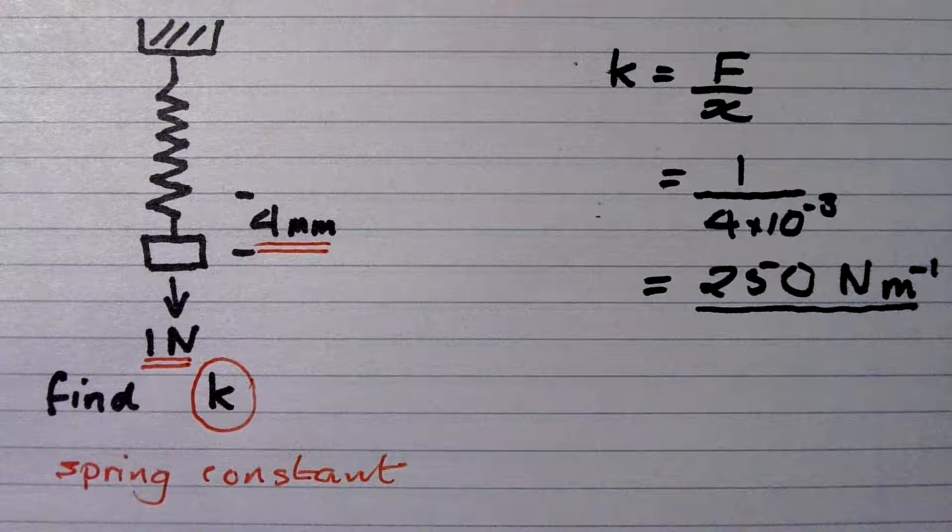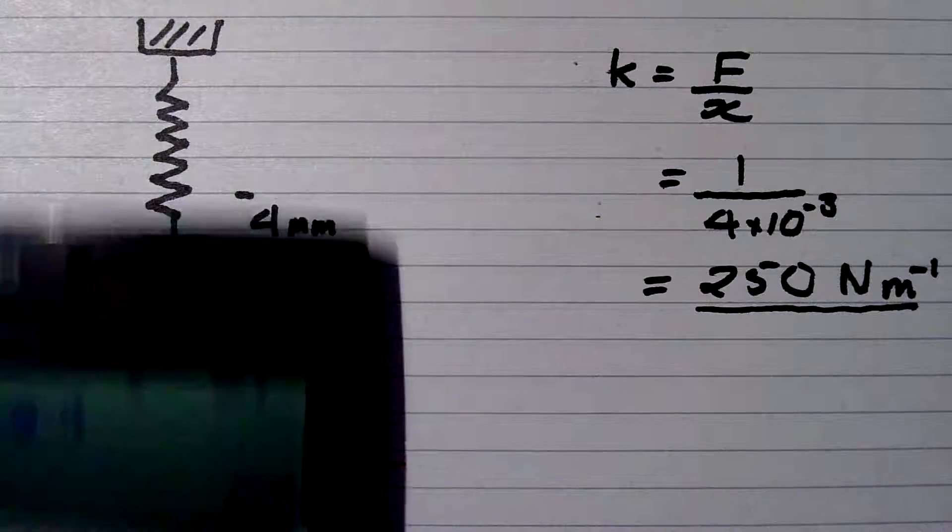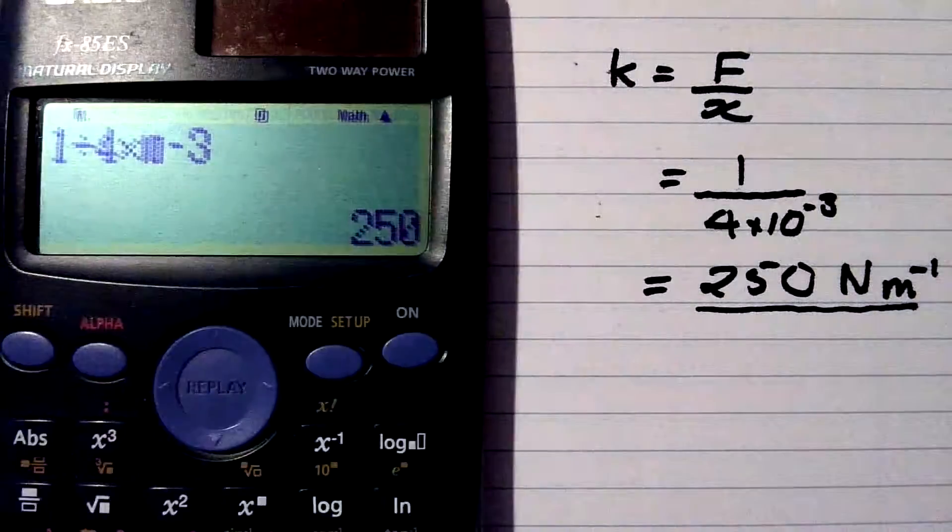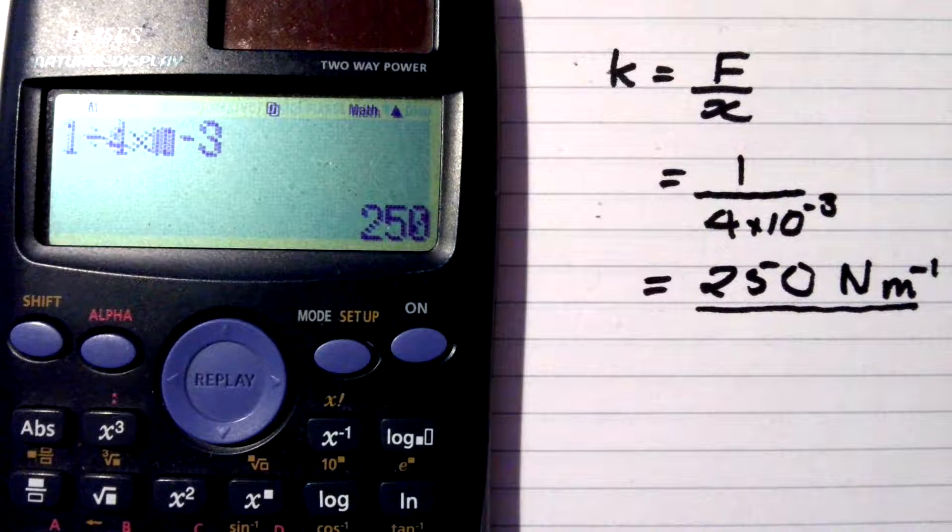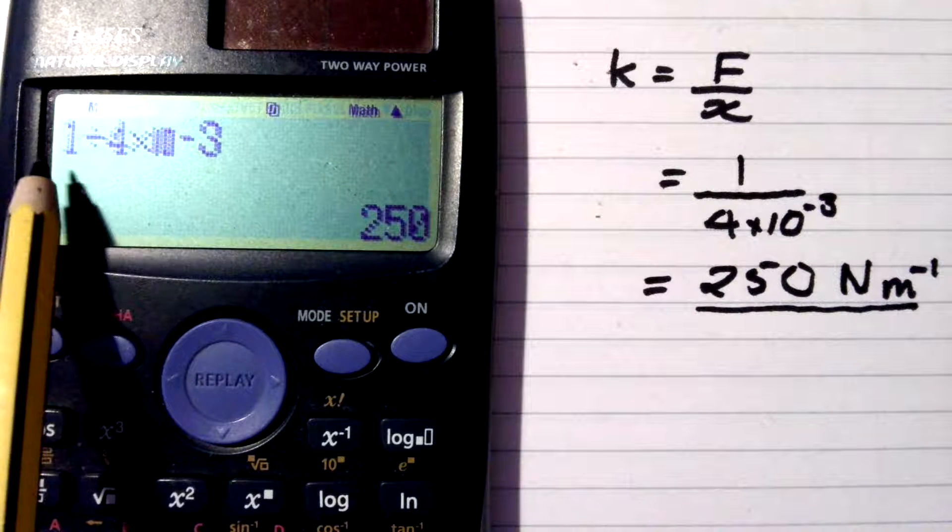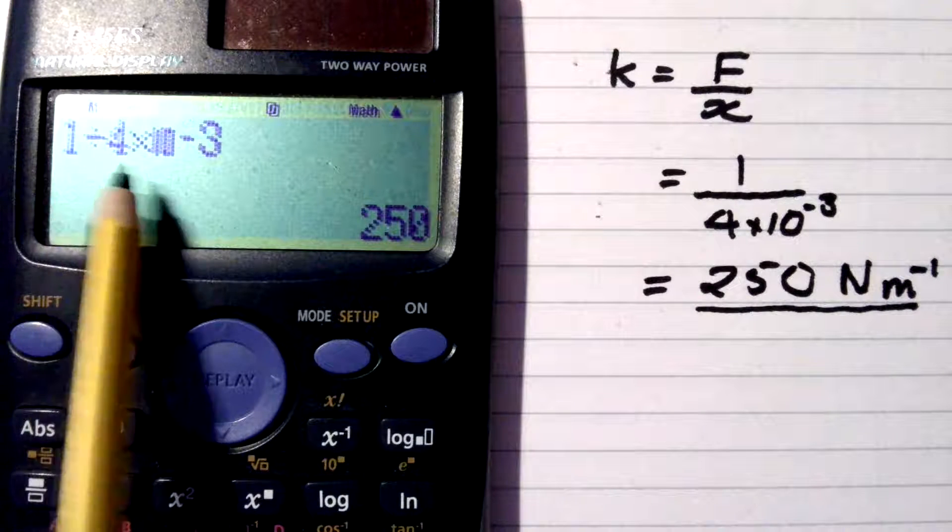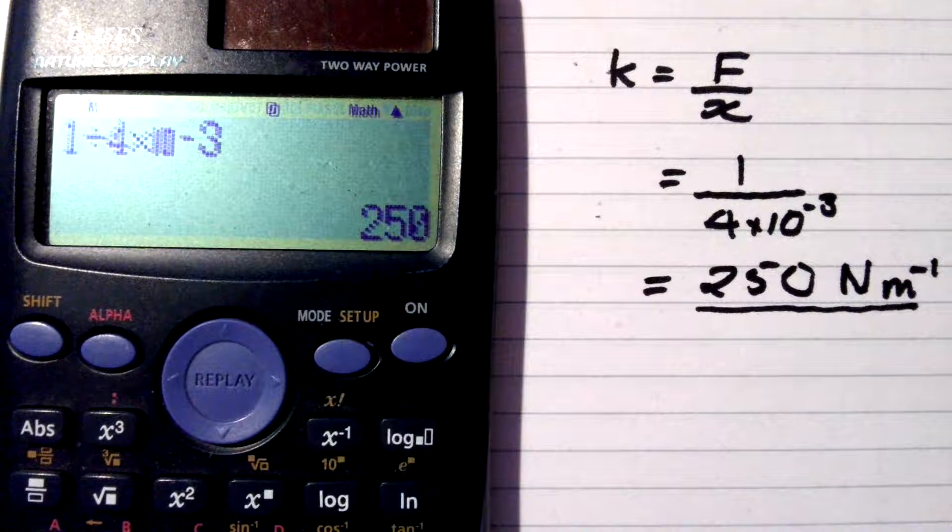OK, let's have a look at what some Casio calculators give. Here's an old calculator, probably round about 15 years old. And you can see, it's 1 divided by 4 to the negative 3, and there's your answer, 250.